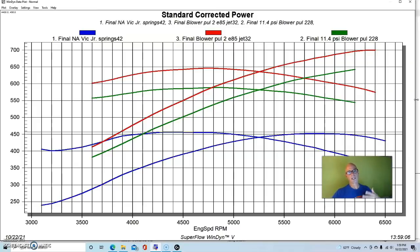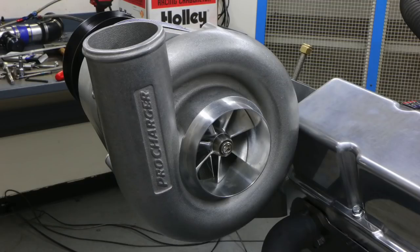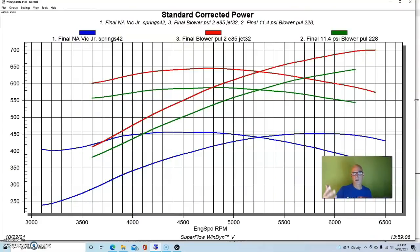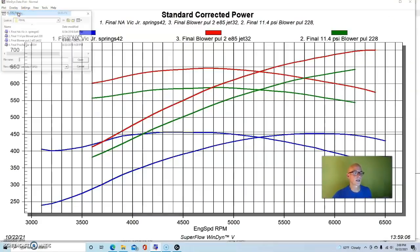But we weren't done yet. We actually ran this motor with nitrous and we also ran it with a Torque Storm, but the one I wanted to show you is we also ran this thing with a Pro Charger. The Pro Charger that we ran had much more power potential than this 671 did. This was an F1A-94, and we can go ahead and take a look at what kind of power we got from the Pro Charger.